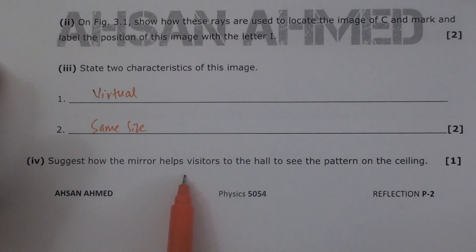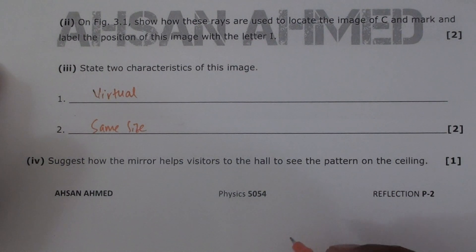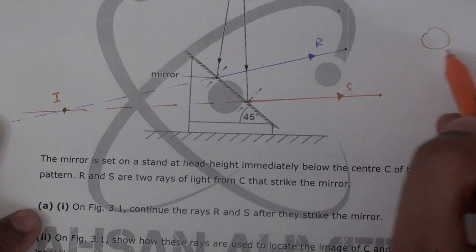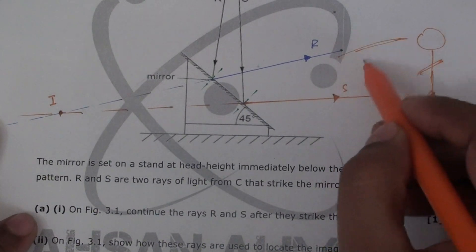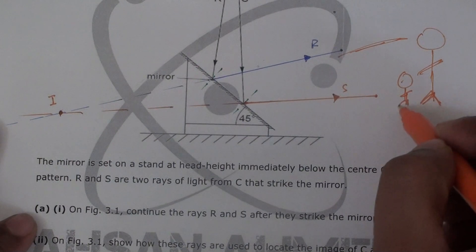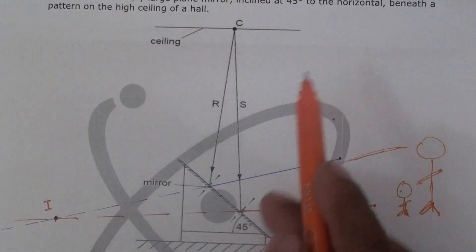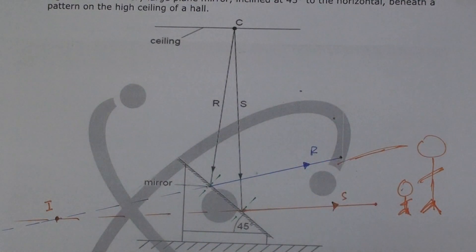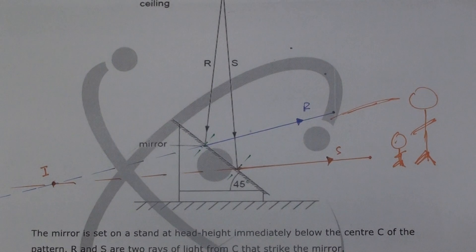The next part asks how the mirror helps visitors to the hall see the pattern on the ceiling. Since the mirror is inclined at 45 degrees, visitors standing in front of it can see the ceiling pattern reflected toward them. Light from the ceiling reflects off the mirror so even small children can easily see works like those of Leonardo da Vinci or Michelangelo displayed on the ceiling.